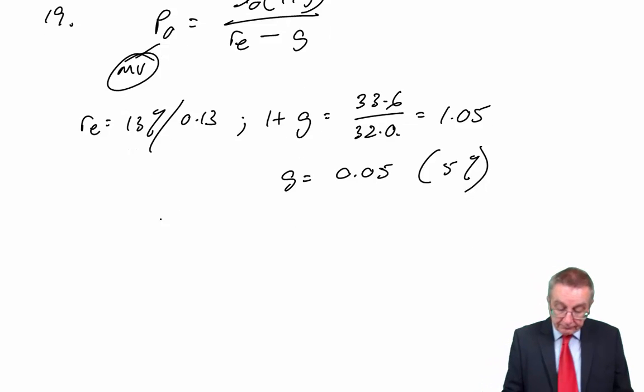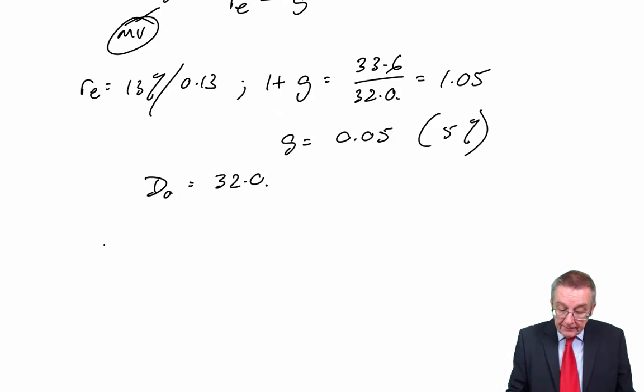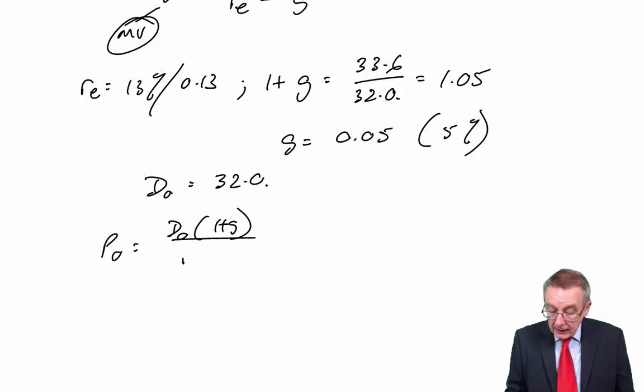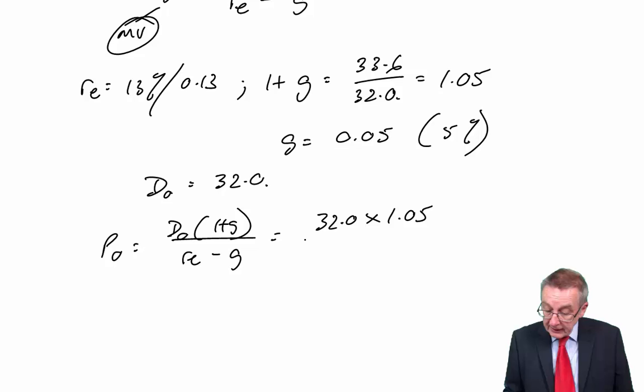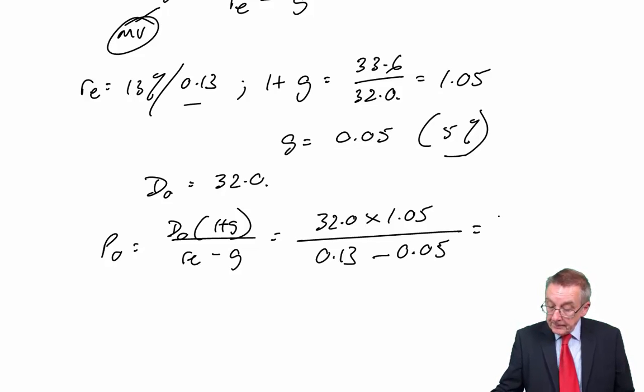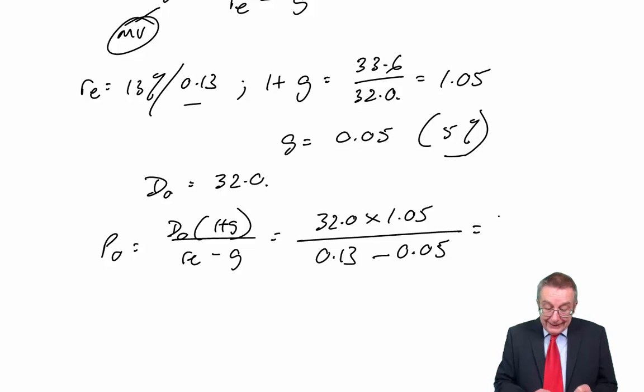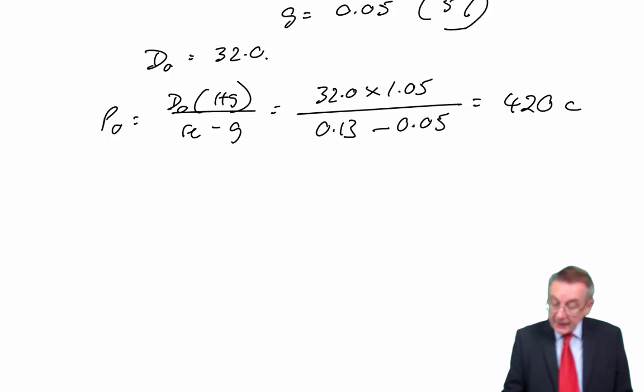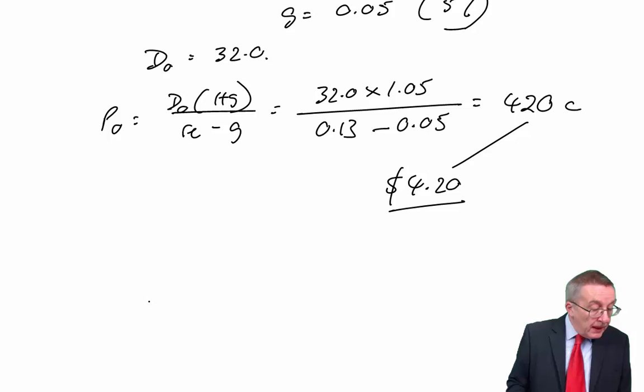And of course, D0 is the dividend they've just paid, the current dividend, at 32. So sitting here to the formula, P0 is 32 times 1.05 over 0.13 minus 0.05. Which comes to 32 times 1.05, divided by 0.08. I get 4.20. And I have been working in cents. The market value is 4.20, or of course, $4.20. And the answer's D.